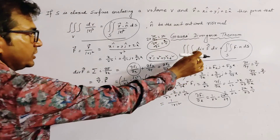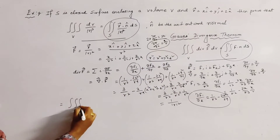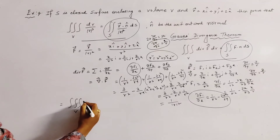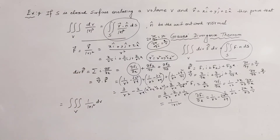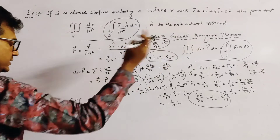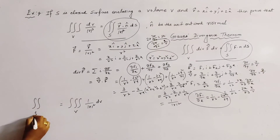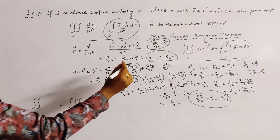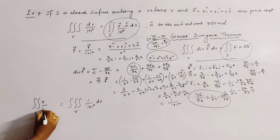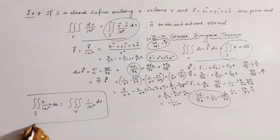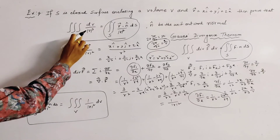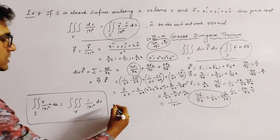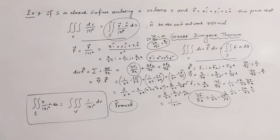Therefore, the left-hand side becomes triple integration over V of 1/|r|² dV, and the right-hand side is double integration over S of (r/|r|²)·n̂ dS. This completes the required transformation, proving the result.